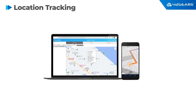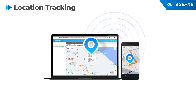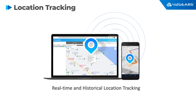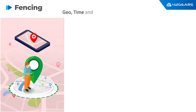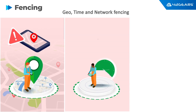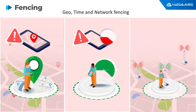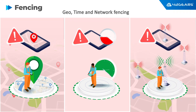For tracking devices, you can use the real-time location tracking feature. You can see where devices are on Google Maps, and historical location information is also available. You can also apply location-based, time-based, and network-based fences to your devices, and apply restrictions whenever any device enters or exits the fence.